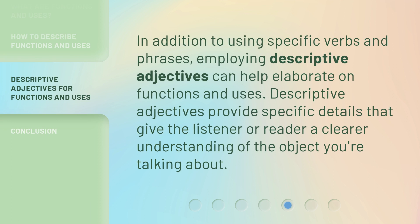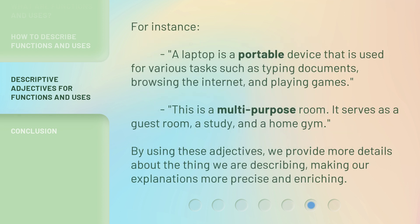In addition to using specific verbs and phrases, employing descriptive adjectives can help elaborate on functions and uses. Descriptive adjectives provide specific details that give the listener or reader a clearer understanding of the object you're talking about. For instance, a laptop is a portable device that is used for various tasks such as typing documents, browsing the internet, and playing games. This is a multi-purpose room — it serves as a guest room, a study, and a home gym. By using these adjectives, we provide more details about the thing we are describing, making our explanations more precise and enriching.